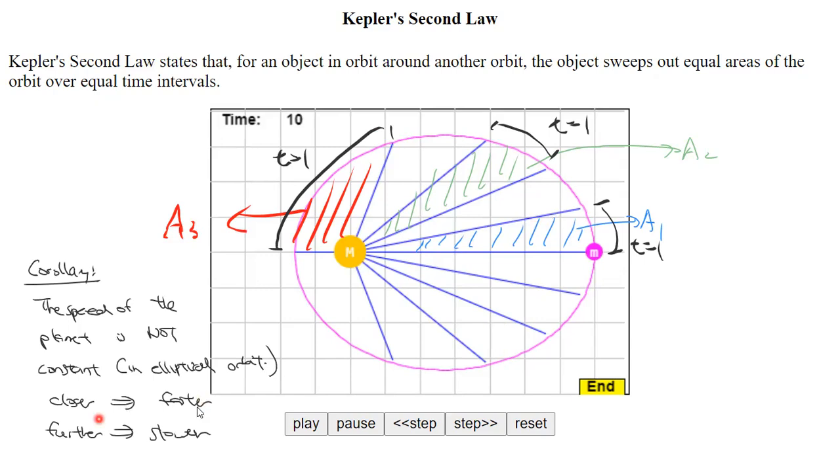But this concept of the fact that the speed is not constant is actually going to be important to you when we get on to talking about orbital mechanic energy, which we'll get to next week. But for now, we'll be talking about Kepler's third law.